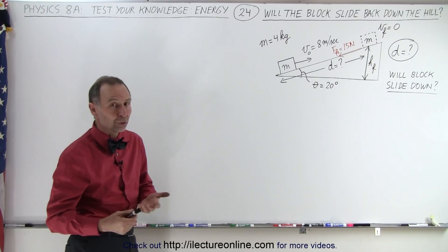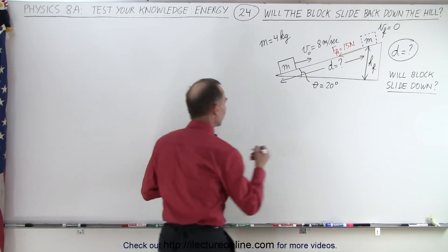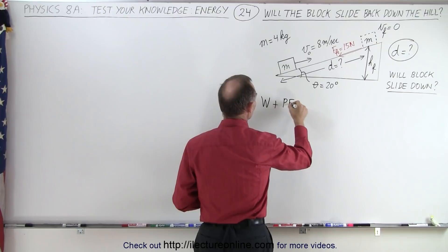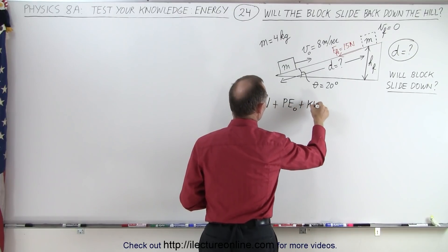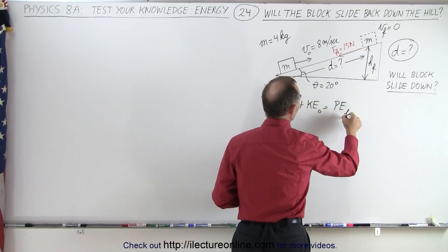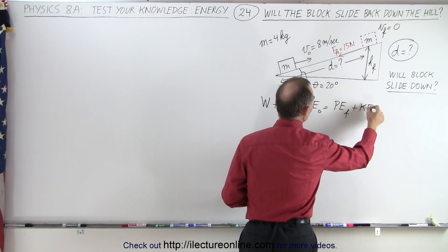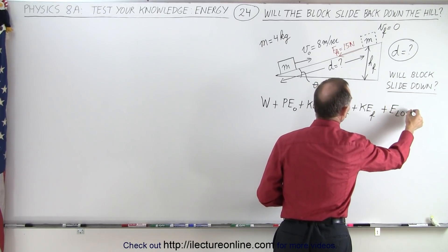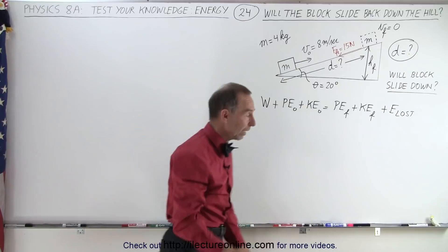So to find the distance d we'll use the energy conservation equation. We'll write that the work put into the system plus the original potential energy plus the original kinetic energy equals the final potential energy plus the final kinetic energy plus any energy lost due to friction, and yes indeed there is friction so energy will be lost.